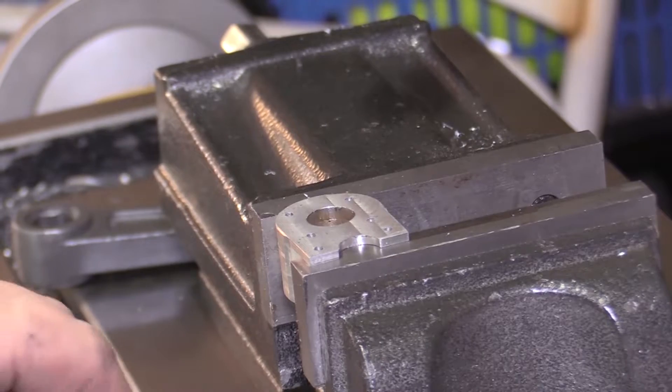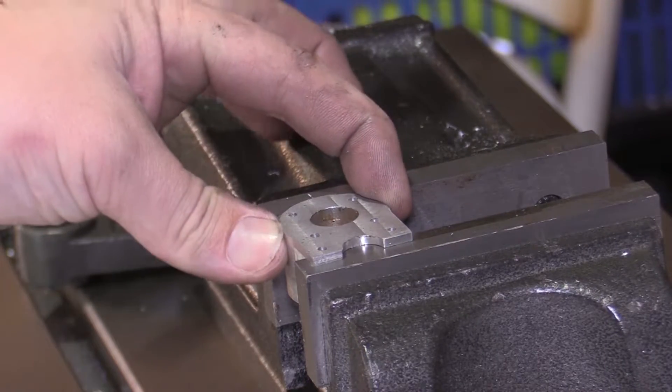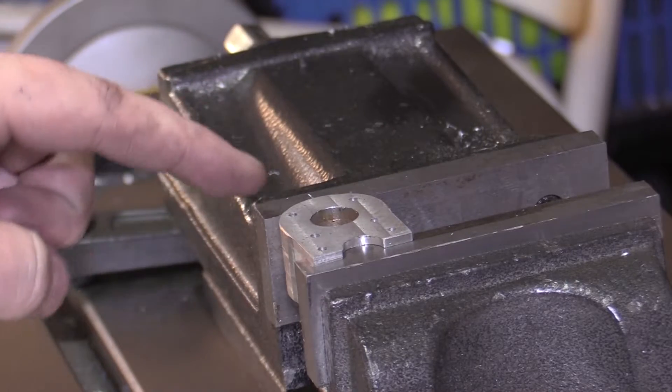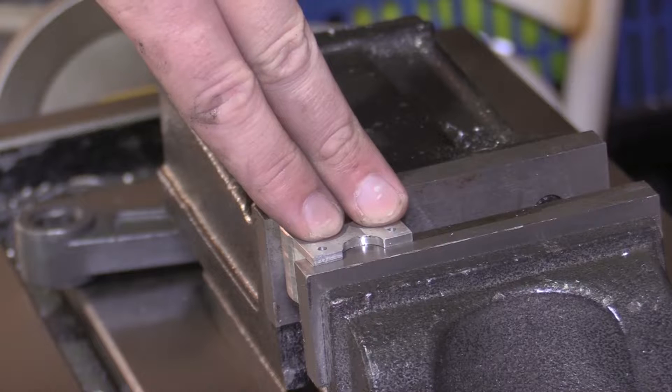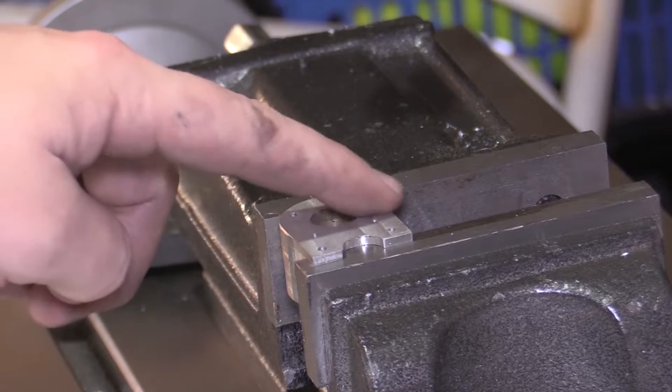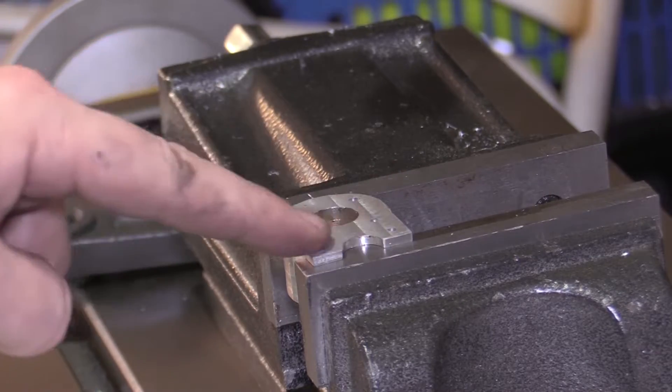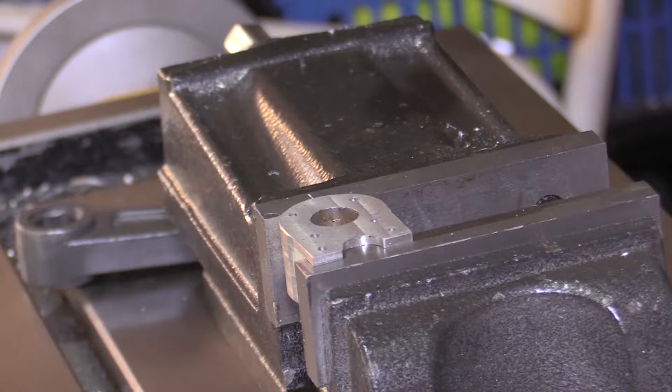The last thing to do now on this part is to tap these holes, and this will be what holds it to the rear upright. And then these two holes here, they are for the brake caliper to be fixed to in the future. But for now I'm just going to tap these four until I work out how the brake caliper will fix. So let's get them tapped.